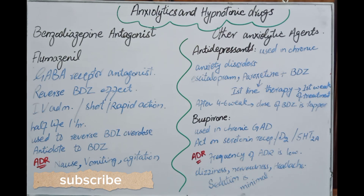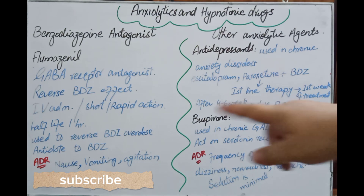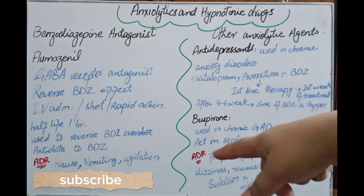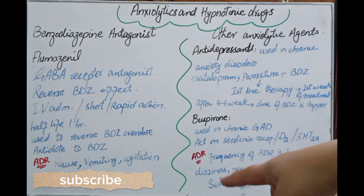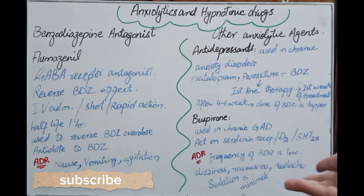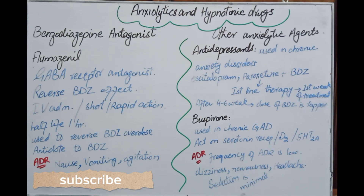Flumazenil is administered intravenously, has a short duration of action and a short half-life, with rapid onset of action. Because of its short half-life, continuous infusion may be needed to reverse the action of long-acting benzodiazepines.